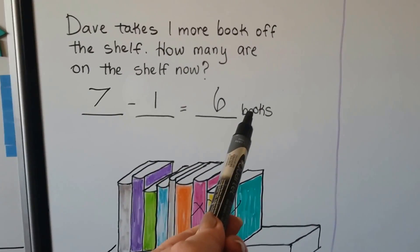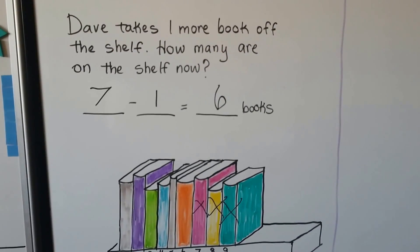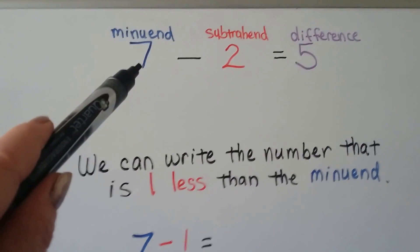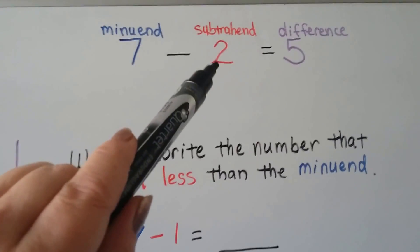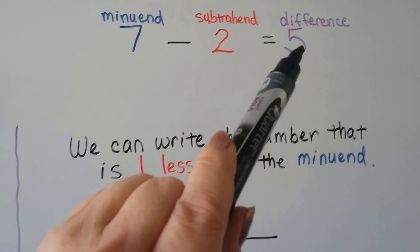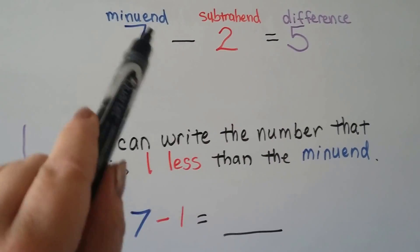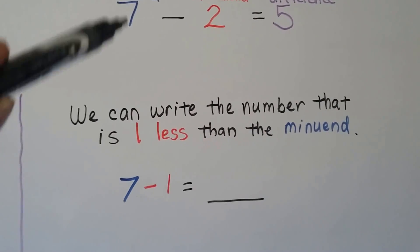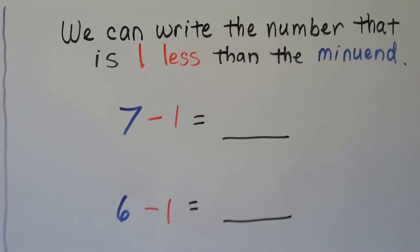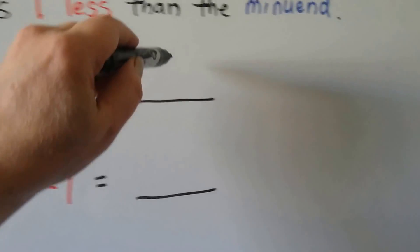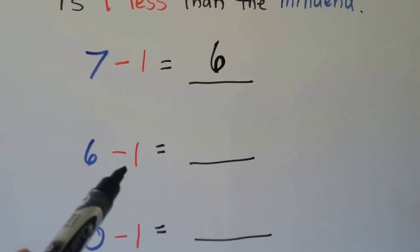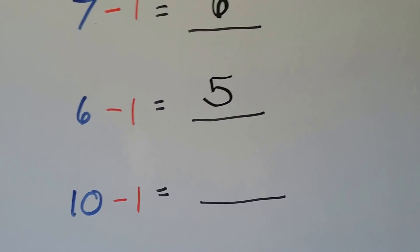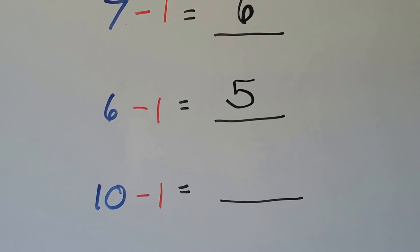It's important to write what is left over from the word problem — it's books, that's what we were counting. We can write the number that is 1 less than the minuend. Remember, the minuend minus the subtrahend — the subtrahend is how many we count back — equals the answer, the difference. 7 minus 1: count back 1, 7, 6. 6 minus 1: one less than 6 — 6, 5. 10 minus 1: count back 1 — 10, 9.